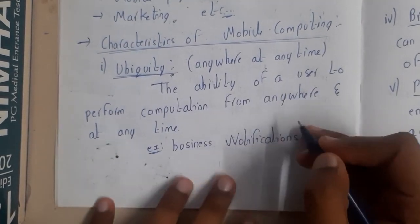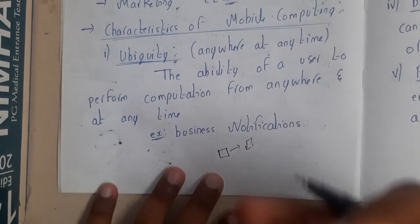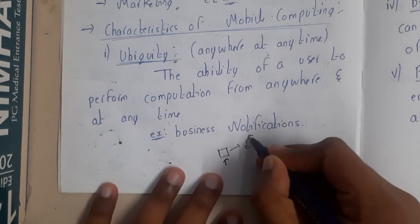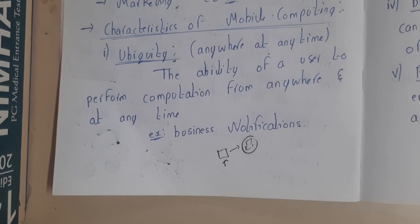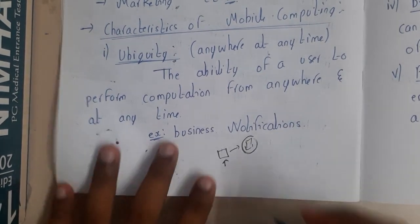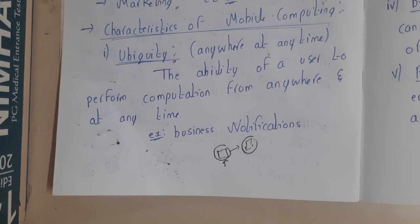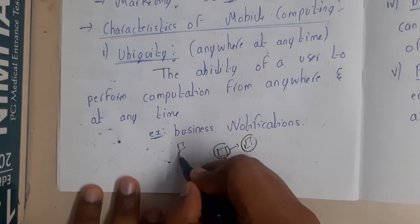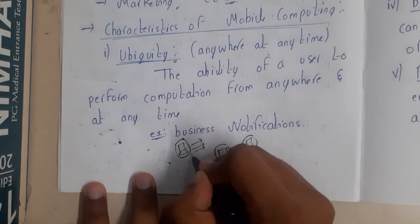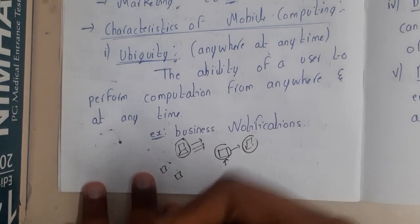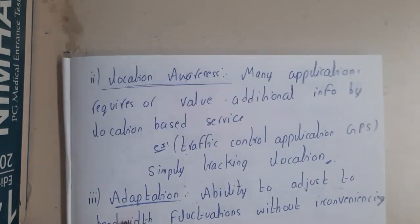A simple example of ubiquity: from your mobile you can send data or a message to your friend via WhatsApp from anywhere. If there were no mobile computing — no movable devices — you would need to be at home at your computer to send a message. While you are on a bus, in the street, or in a corridor, you could not send a message. That is a major advantage.